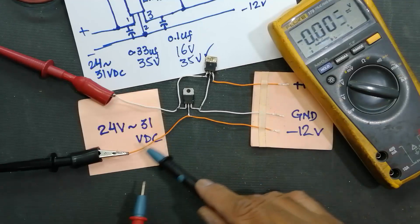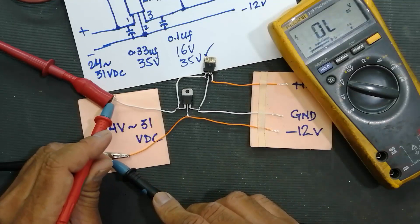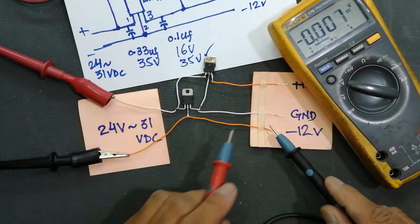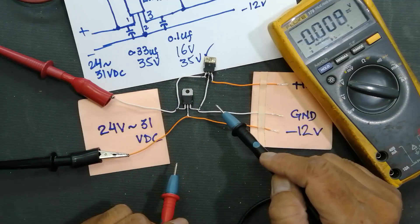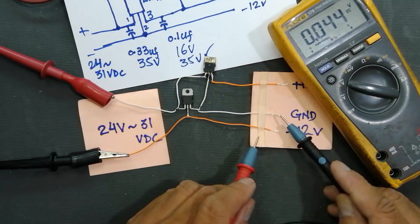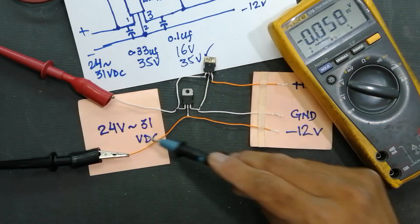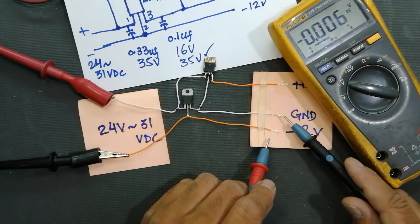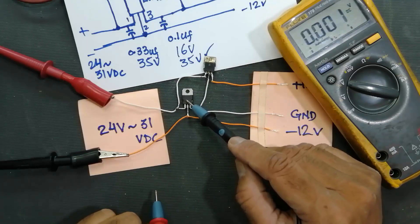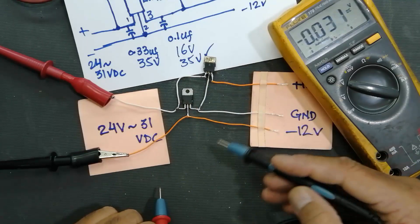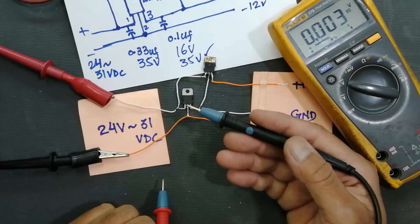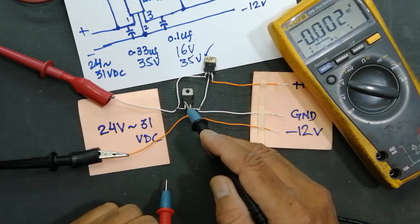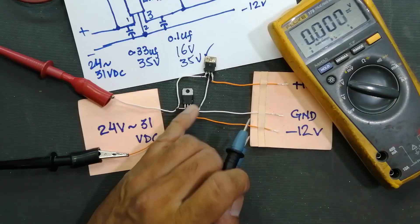Actually this line is the return line and this is the positive line, positive and ground. But when we use these positive regulators 7812, LM7812, then we split it. Now we can drive any circuit with plus minus voltage. We can design plus minus 5, plus minus 3.3, plus minus 6 volt, plus minus 8 volt, 9 volt, 12 volt, 15, 18.